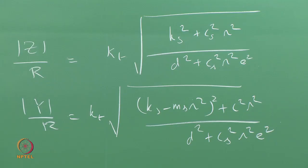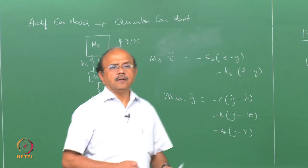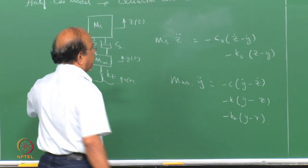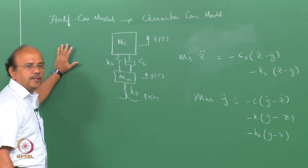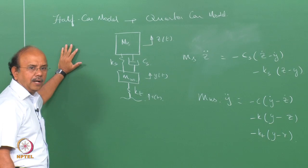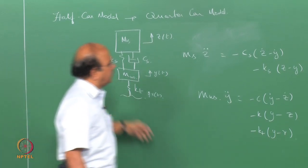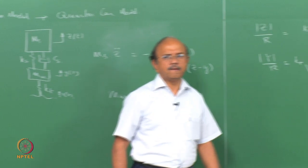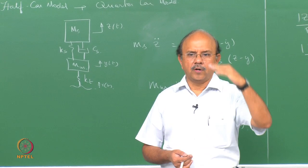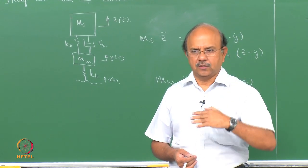So z/r equals KT × √(Ks² + Cs²ω²) divided by D² + Cs²ω²E², and y/r equals KT × √((Ks − Ms·ω²)² + C²ω²) divided by D² + C²ω²E², where D and E we had already written. These are the ratios of displacements Z and Y due to road input R. The other quantity is what is called road holding — the force that the vehicle exerts onto the road.